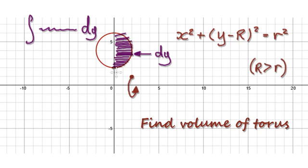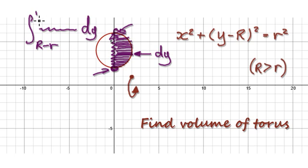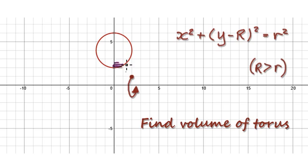We're going to integrate from here all the way up to here. The lower bound will be capital R take away small r, and the upper bound will be capital R plus small r. So we are going to sum up everything between those bounds.